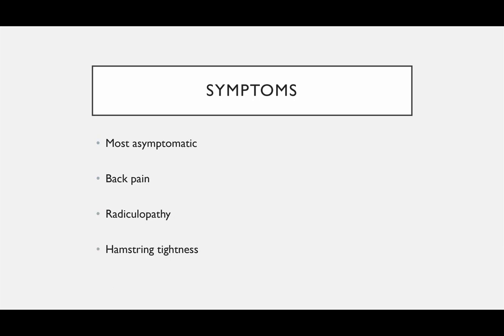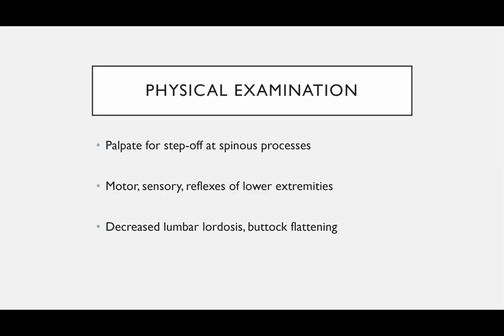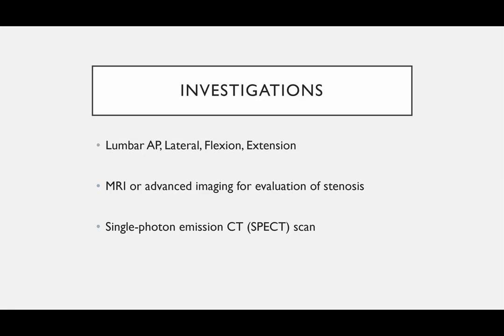Patients can be asymptomatic, and sometimes these are incidental findings. They can present with back pain, radiculopathy, and hamstring tightness. On physical exam, palpate for step-offs if there's significant spondylolisthesis. Do a neurovascular exam, and you may notice decreased lumbar lordosis or flattening of the buttock.